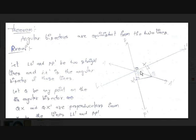Now let the angle made by the angular bisector with the other lines be theta, and let the intersection point be O. As you can see, XQ and X'Q are the perpendiculars from the point Q on the angular bisector to the other two lines. These form two right angle triangles: OQX and OQX'.